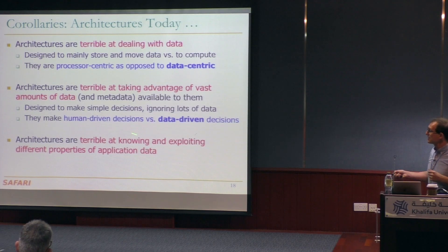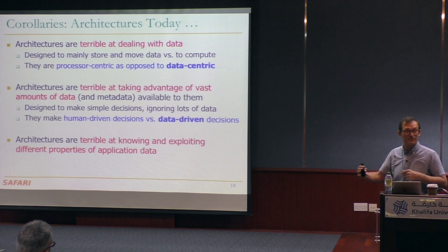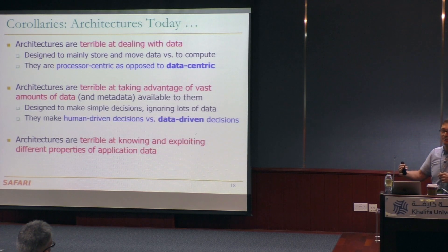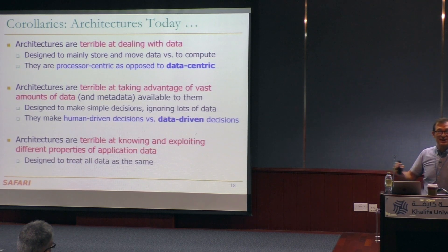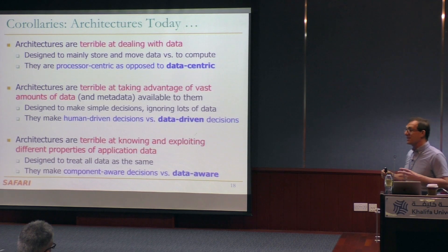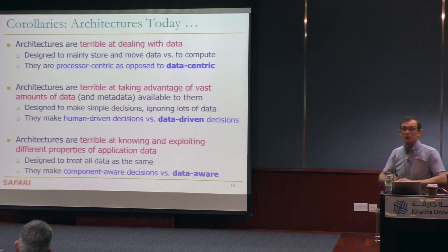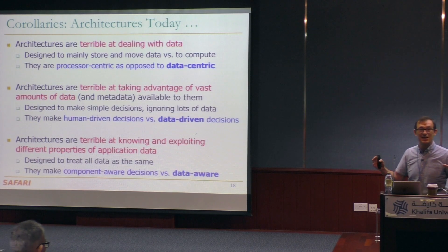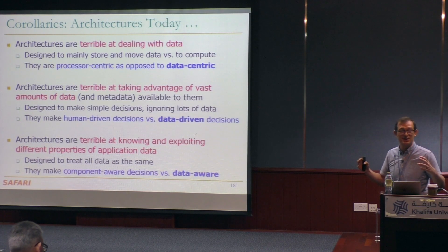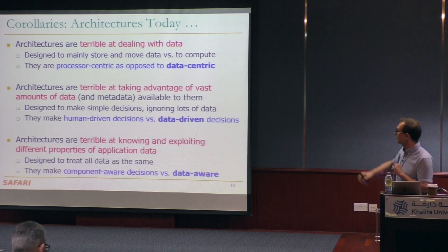The third corollary: architectures are terrible at knowing and exploiting different properties of application data. They're not aware of it, and because they're not aware of it, they cannot exploit it. They're designed to treat all of the data the same. As a result, they make component-aware decisions — cache-aware, memory-controller-aware — as opposed to data-characteristic-aware decisions. What can I do to this data that is not considered in the design of these different components today?